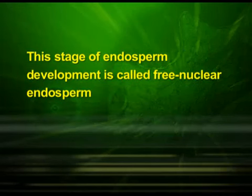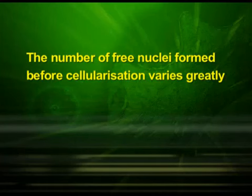This stage of endosperm development is called free nuclear endosperm. Subsequently, cell wall formation occurs and the endosperm becomes cellular. The number of free nuclei formed before cellularization varies greatly. The coconut water from tender coconut is an example of free nuclear endosperm, which is made up of thousands of nuclei, and the surrounding white kernel is the cellular endosperm.